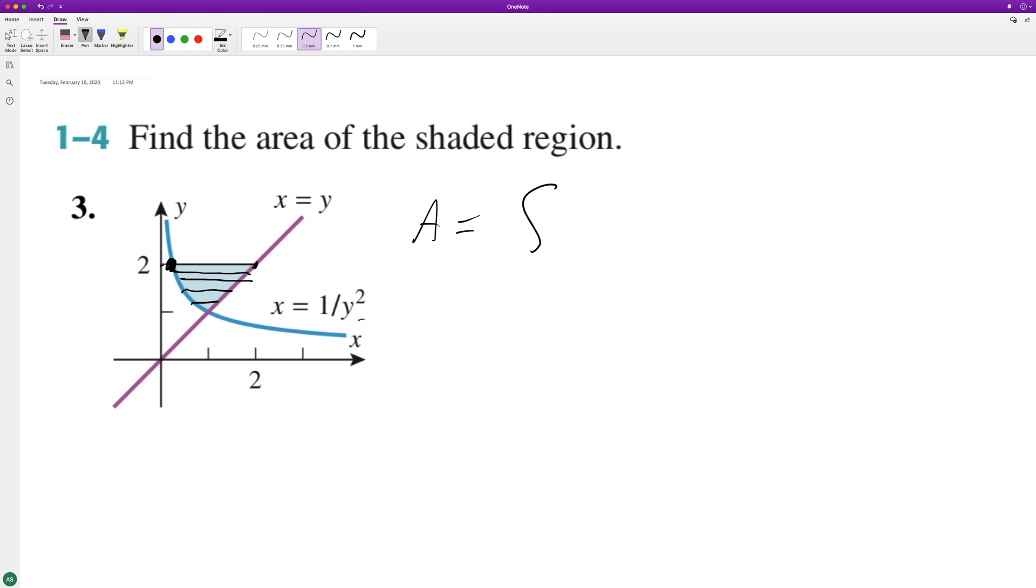Area is going to be equal to, we're going from 1, which is right here, to 2. Yeah, I goofed up. Okay, so it's going to be y minus 1 over y squared.